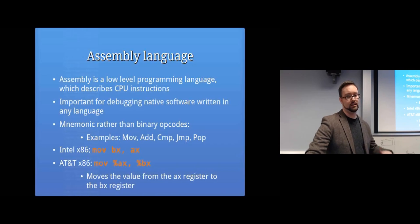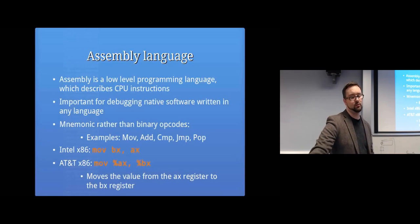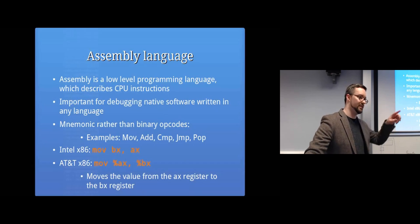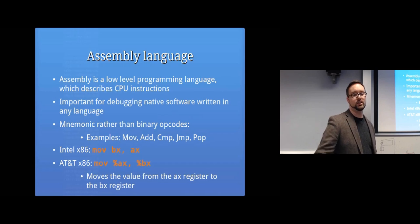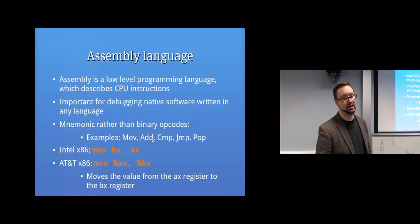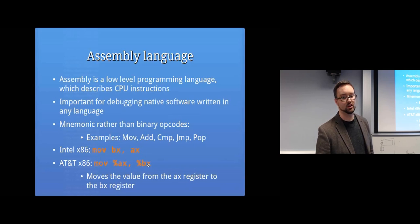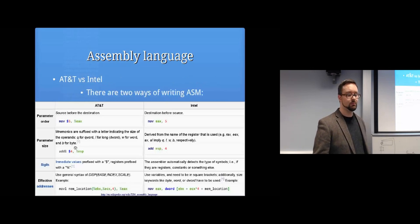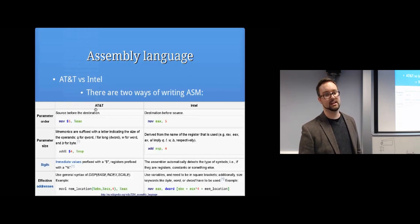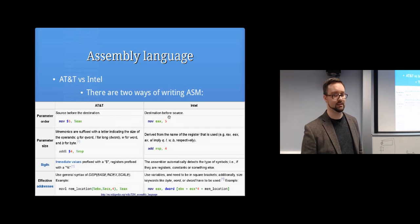Instead of reading binary opcodes, we use mnemonics like MOV, ADD, compare, jump, and pop - those are the basic instructions of a CPU. There are two different formats you can use to write assembly: AT&T and Intel. Usually for Windows you use Intel syntax and for Linux you use AT&T syntax, but they mean basically the same thing - it's just different symbols in a different order. Essentially the same thing.